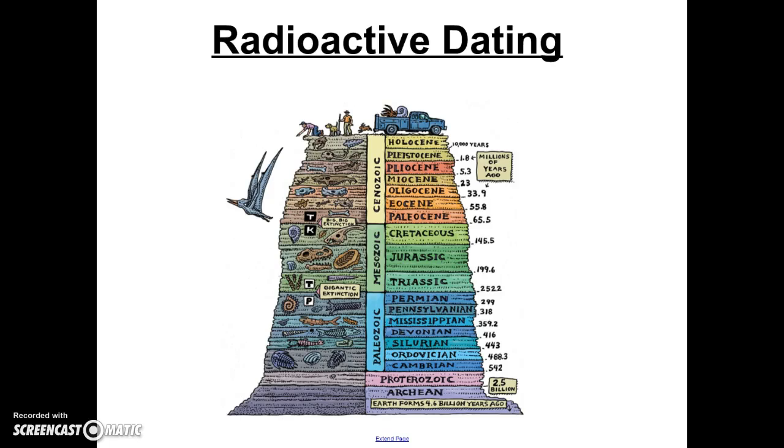We've already learned how to determine the relative age of a rock or a fossil or a geologic event by comparing where it's found in relation to other objects. Today we're going to take a look at how to determine the absolute age or the actual age of the object using a process called radioactive dating.